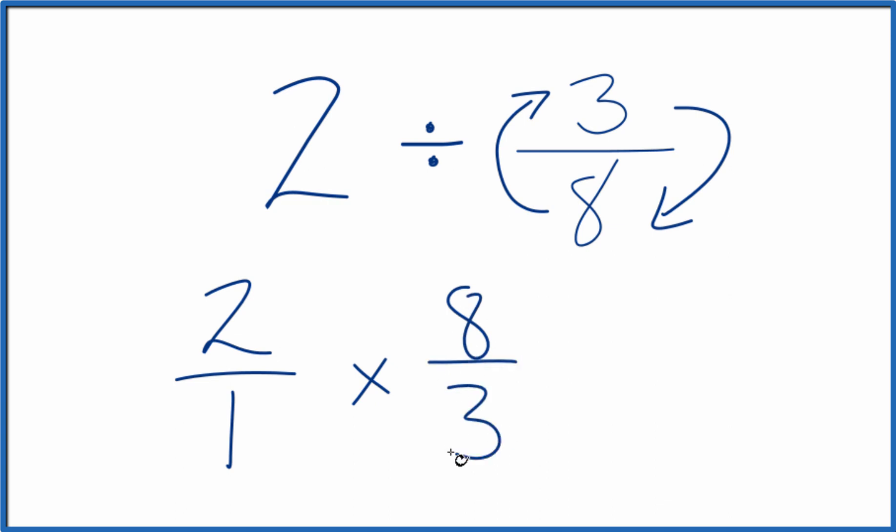Now, when we have fractions, two different fractions, we just multiply them together. 2 times 8, that gives us 16. 1 times 3, that gives us 3. We end up with 16 thirds.